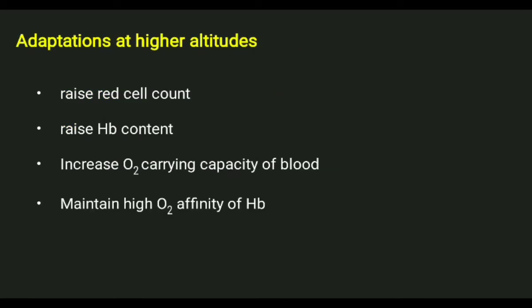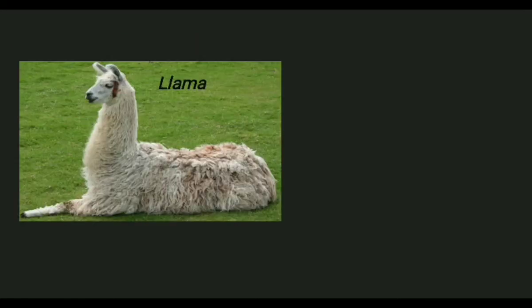Next is about adaptations at higher altitudes. Animals living at higher altitudes have different physiology compared to those at lower altitudes, because of differences in pressure and oxygen availability. In order to live in higher altitude regions, they have high RBC content in their blood, which increases the oxygen-carrying capacity. They also maintain high oxygen affinity of hemoglobin.